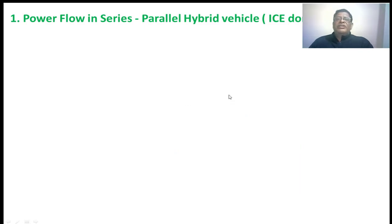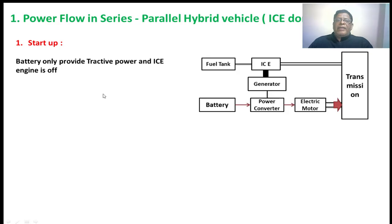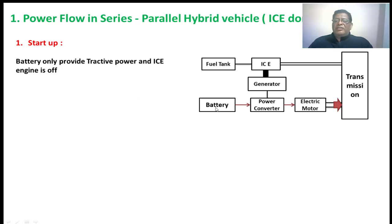Here we are going to study the six modes of operation. The first one is the start-up. At the time of starting, the battery only is providing tractive power to the vehicle — the IC engine will be off. Nothing but this battery will be supplying power to the vehicle.